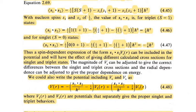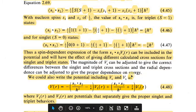Therefore we could also write the potential including V_C and V_S as V(r) with s₁·s₂ terms over ℏ² forming expressions with V₁(r) and V₃(r). Here V₁(r) and V₃(r) are potentials that separately give the proper singlet and triplet behavior.